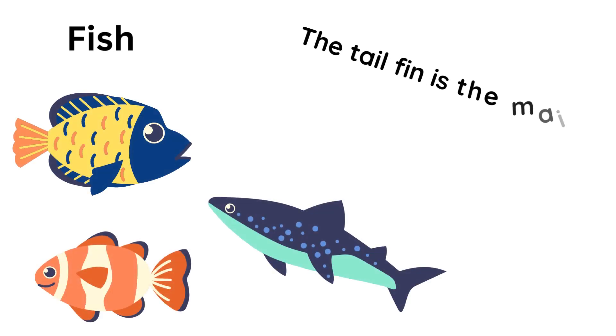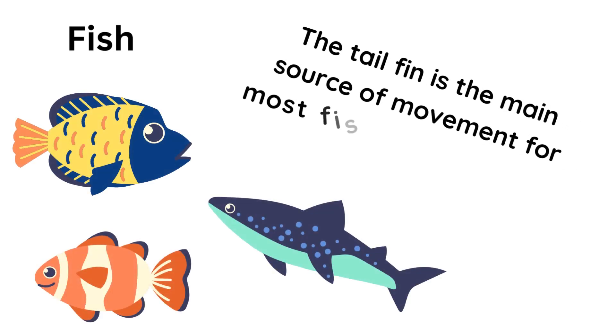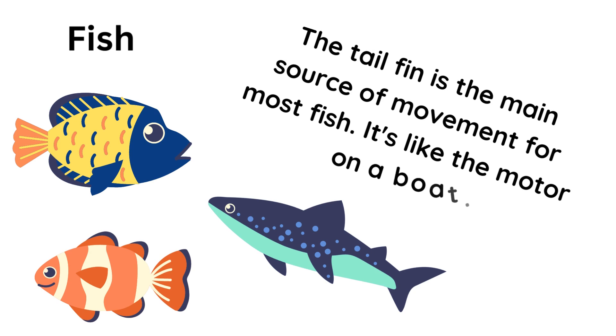The tail fin is the main source of movement for most fish. It's like the motor on a boat. It shouldn't be surprising then that it is shaped differently according to how the fish needs to move most of the time. This helps the fish to move more efficiently through the water.